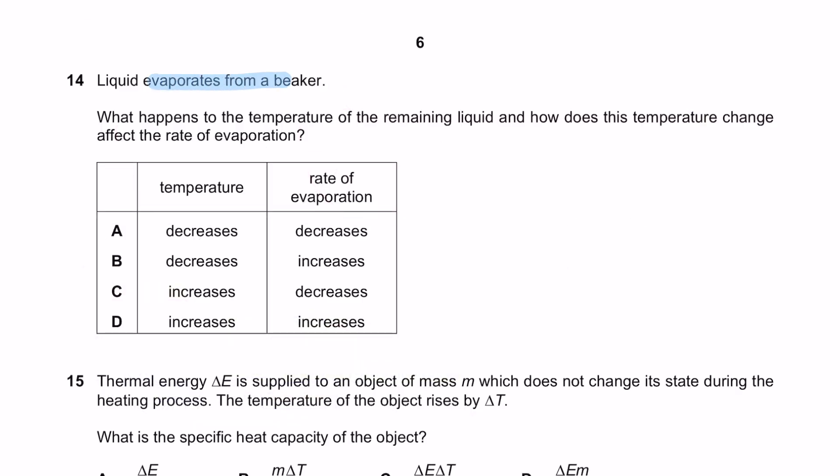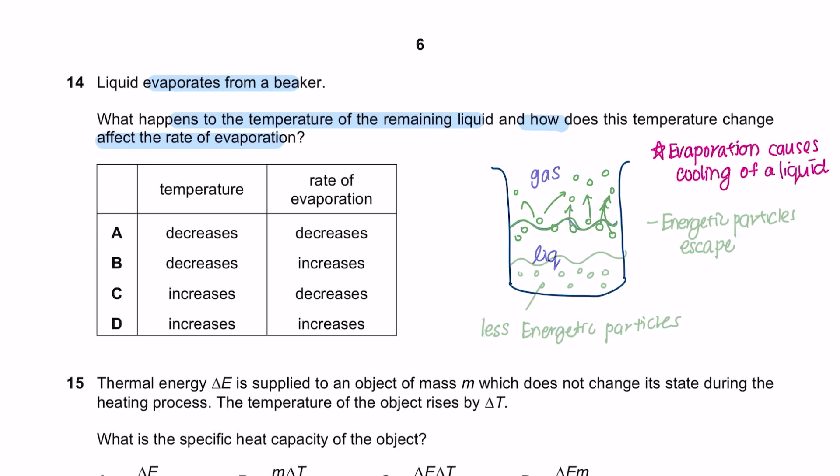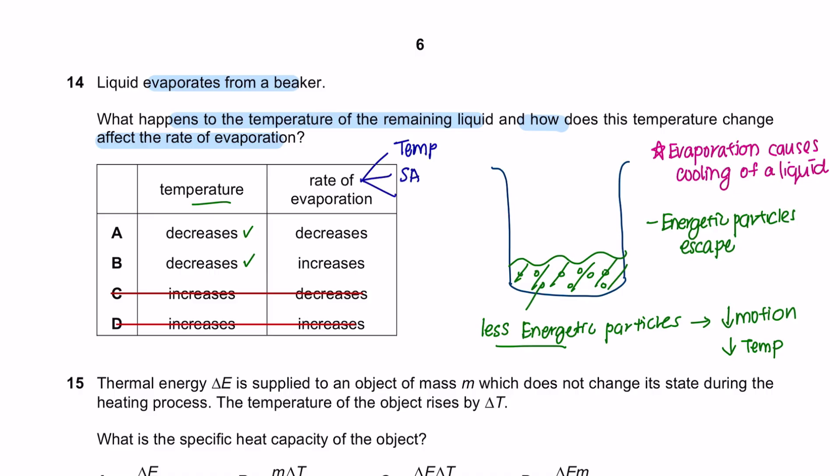Question 14. Liquid evaporates from a beaker. What happens to the temperature of the remaining liquid and how does this temperature change affect the rate of evaporation? Evaporation is the process of liquid converting into gas molecules. And evaporation only happens at the surface of the liquid, whereby the more energetic molecules will escape the surface of the liquid, leaving behind the less energetic particles. Less energetic particles meaning that the motion of the particles is low. If the motion of the particles is low, this means that the temperature of the liquid overall is also low. So as the liquid evaporates, the temperature decreases. The rate of evaporation is affected by 3 factors: temperature, surface area, and air movement. If the temperature of the liquid is now low, then the rate of evaporation will also decrease. So the answer here is A.